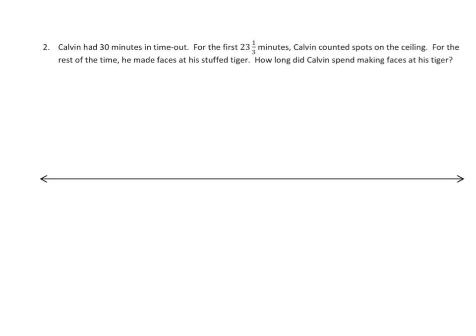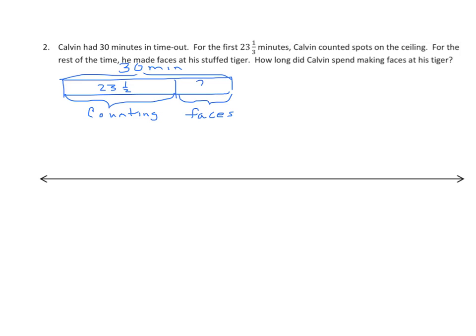Let's do a word problem. It says, Calvin had 30 minutes in time out. For the first 23 and 1 half minutes, Calvin counted spots on the ceiling. For the rest of the time, he made faces at a stuffed tiger. How long did Calvin make faces at a stuffed tiger? I'm going to set up a tape diagram. We know that the whole, his time out is 30 minutes. We know that for 23 and 1 half minutes, he's counting spots. And the remaining time, he's making faces. Question mark there.